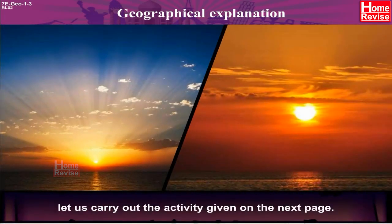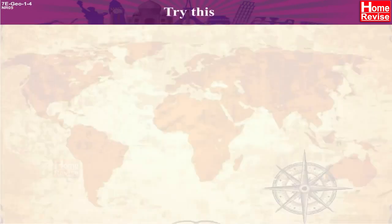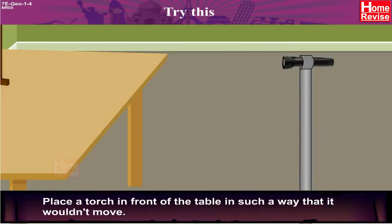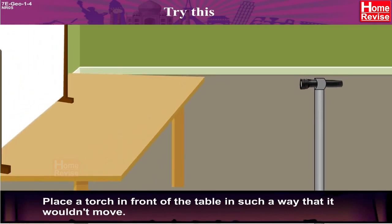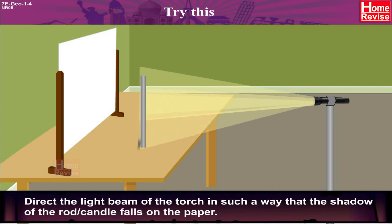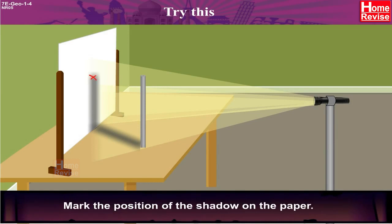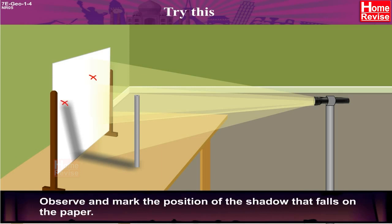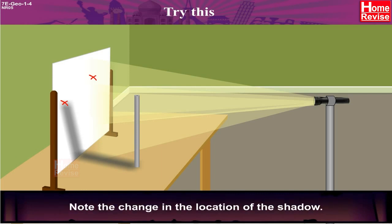Try this activity: Paste a large white paper on one side of the table. Place a torch in front of the table in such a way that it would not move. Stand a rod or a candle between the white paper and the torch. Direct the light beam of the torch so that the shadow of the rod or candle falls on the paper. Mark the position of the shadow, then move the table along with the rod or candle slowly from one side to the other. Observe, mark, and note the change in the position of the shadow.